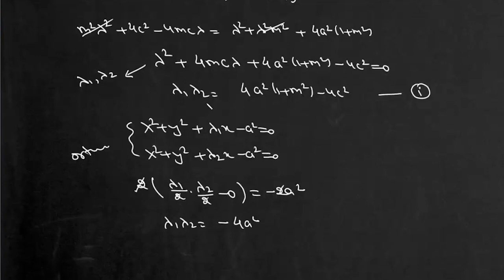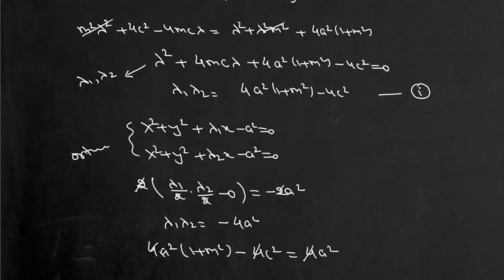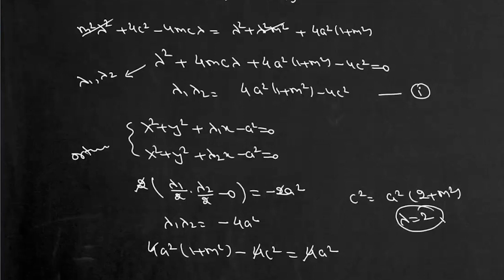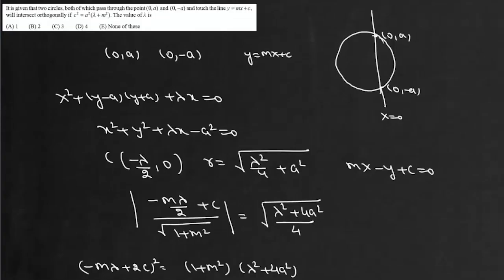Substituting the product: 4a²(1 + m²) - 4c² = -4a². Dividing through by 4, we get c² = a²(2 + m²). Comparing with the given condition c² = a²(λ + m²), the value of λ must be 2. So the answer is λ = 2, which is option (b).